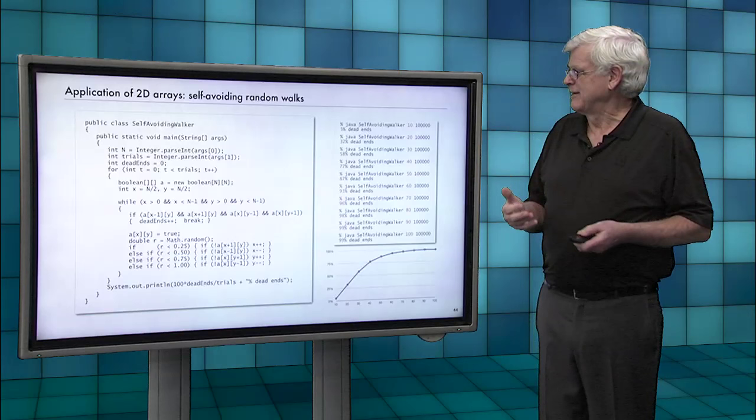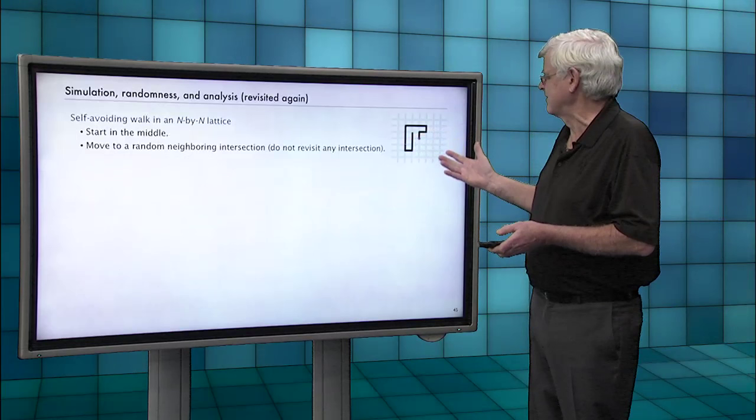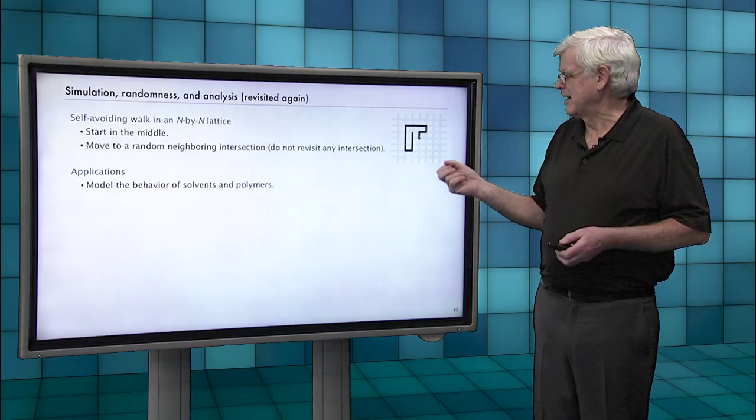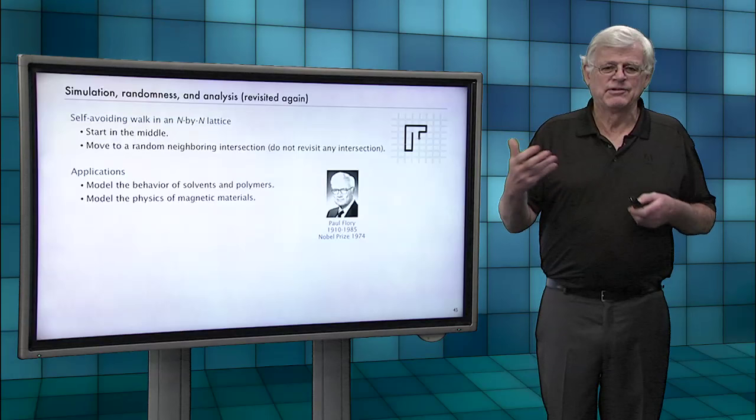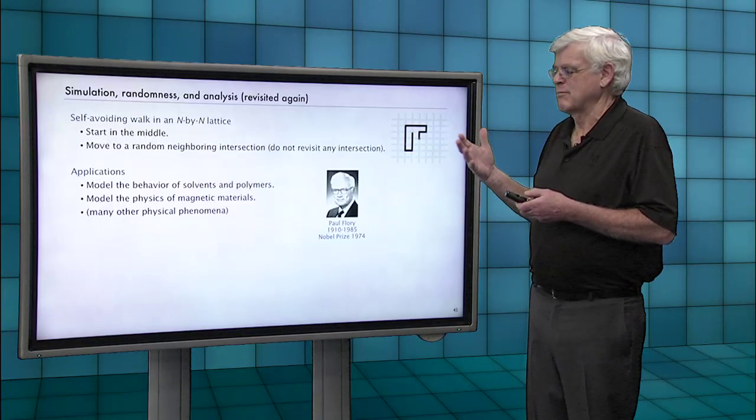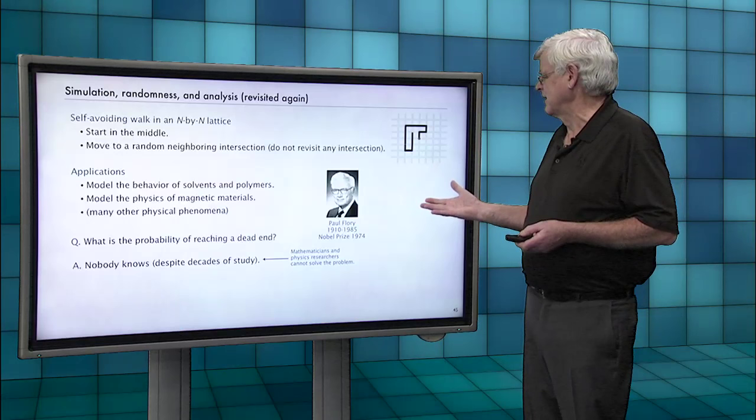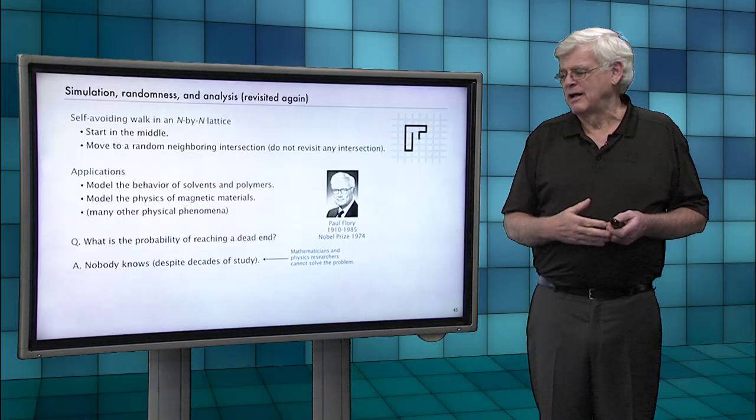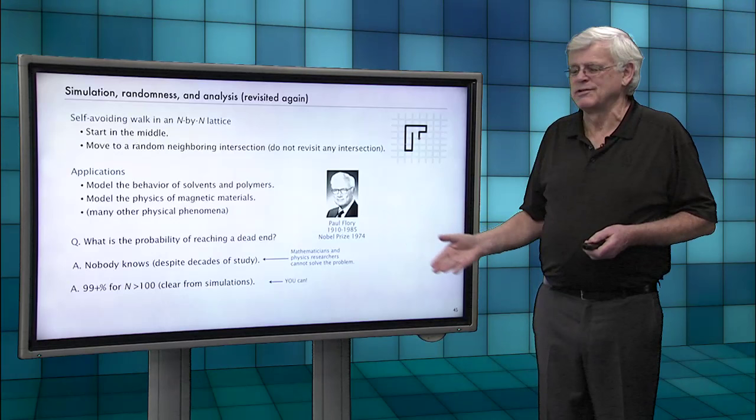This seems a little bit like a whimsical problem, but this is actually, like many such problems, there's very important applications in science. So that's our problem. It's been used to model the behavior of polymers and solvents. And actually a Nobel Prize was won for study of associated phenomenon. And physics of magnetic materials and many other physical phenomena. So it's an important problem that scientists want to understand. What's the probability of reaching a dead end? And you might be surprised to know that nobody knows. People have been studying this for a long time. And we don't have a mathematical model for telling us the shape of that curve that we just plotted in one of your early programming lectures. So we know from our simulations pretty clearly that it's going to be 99% plus for big values of N.